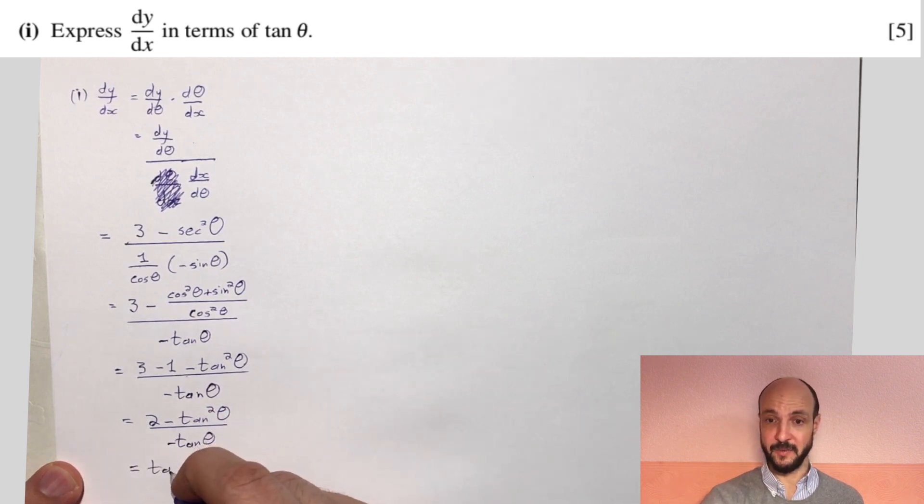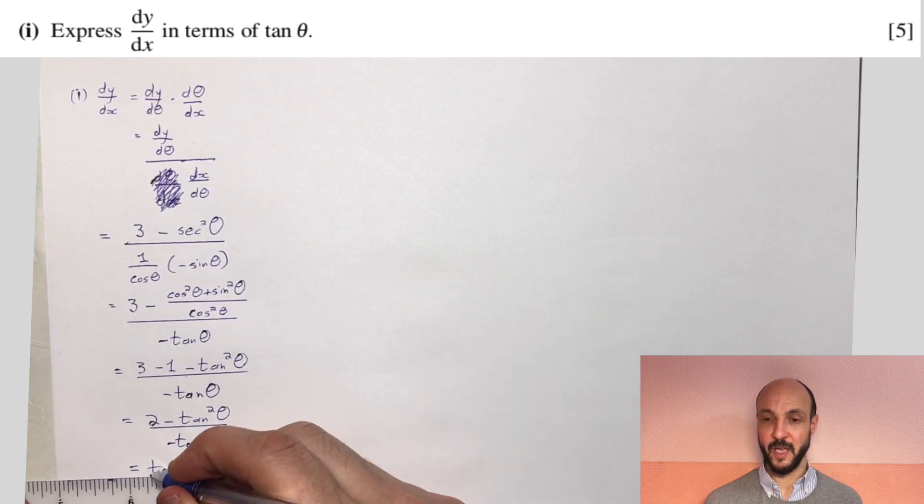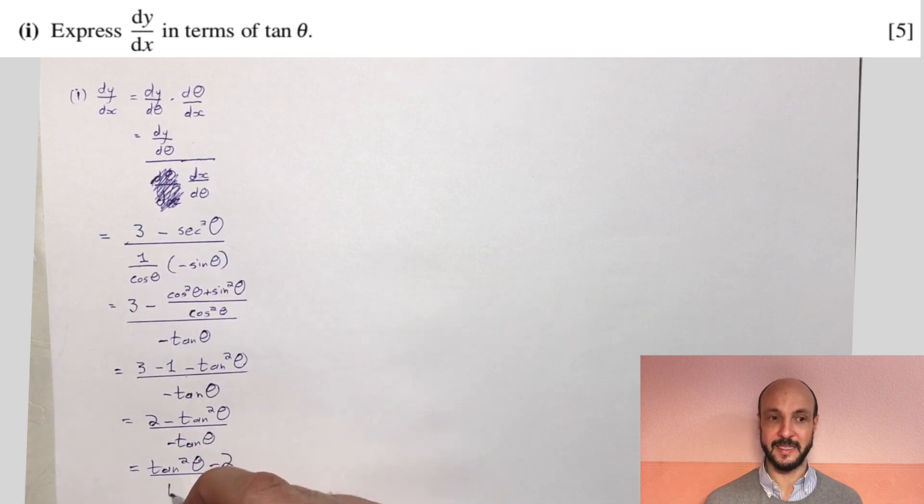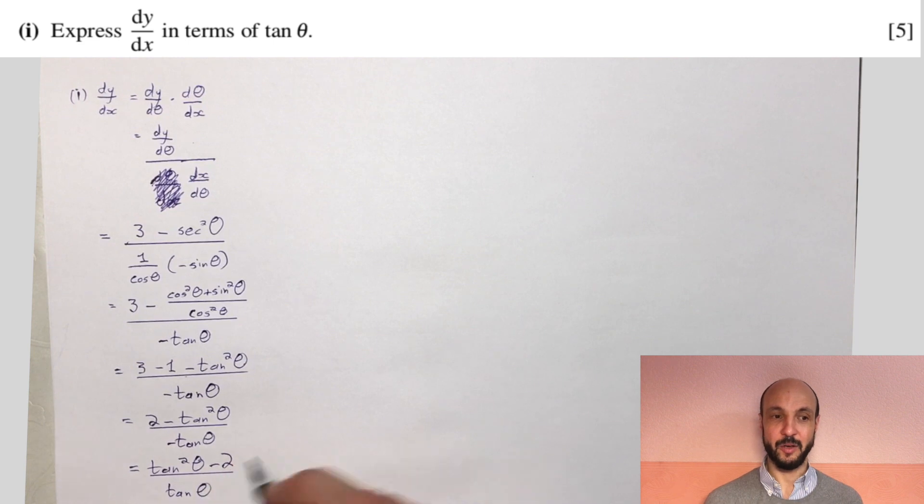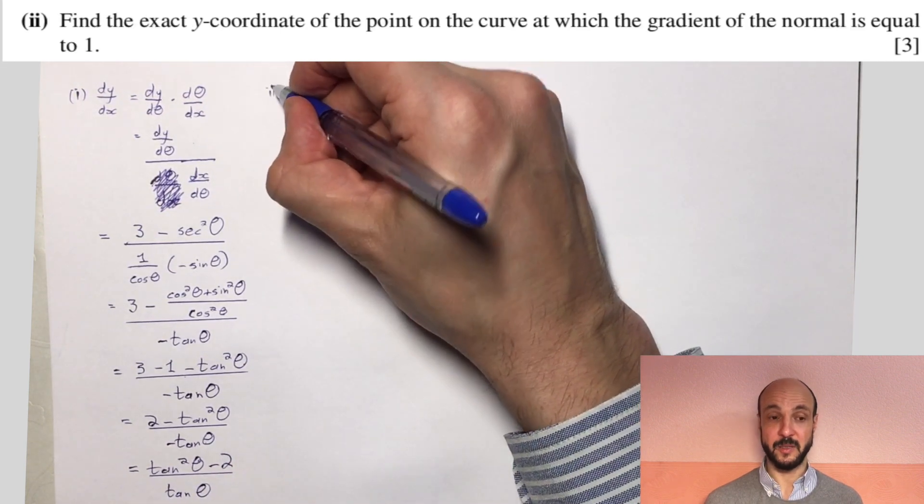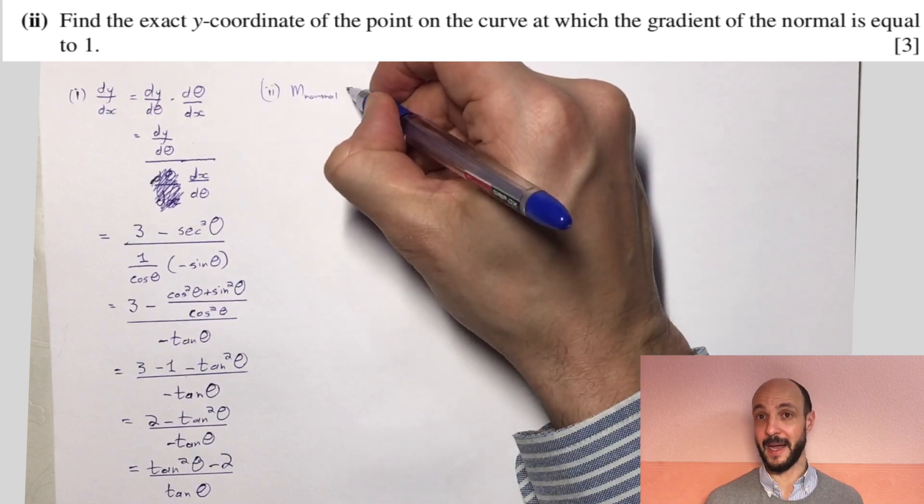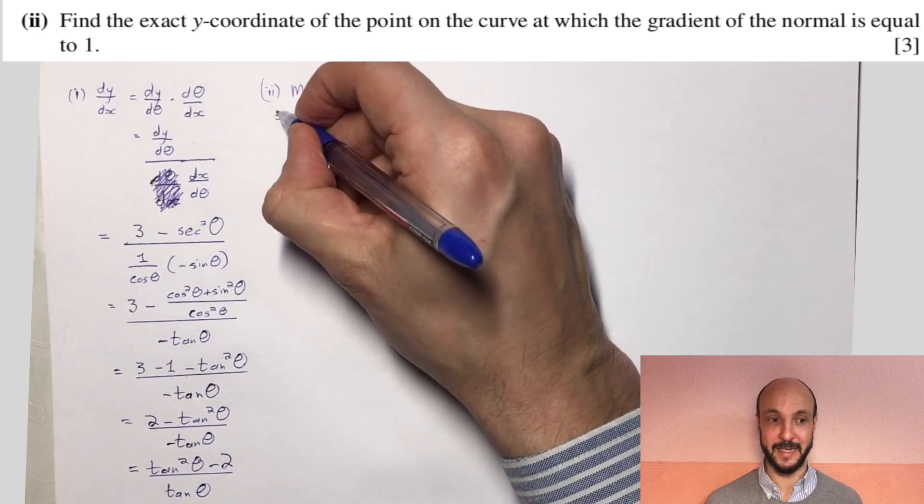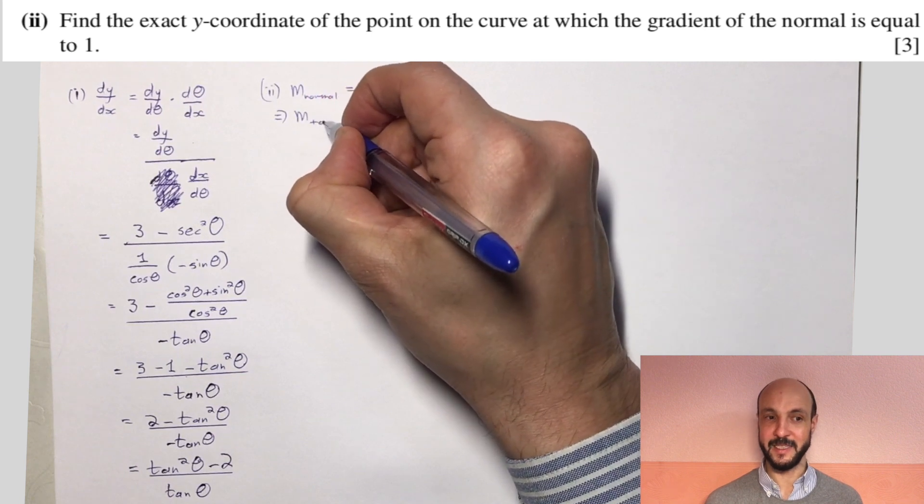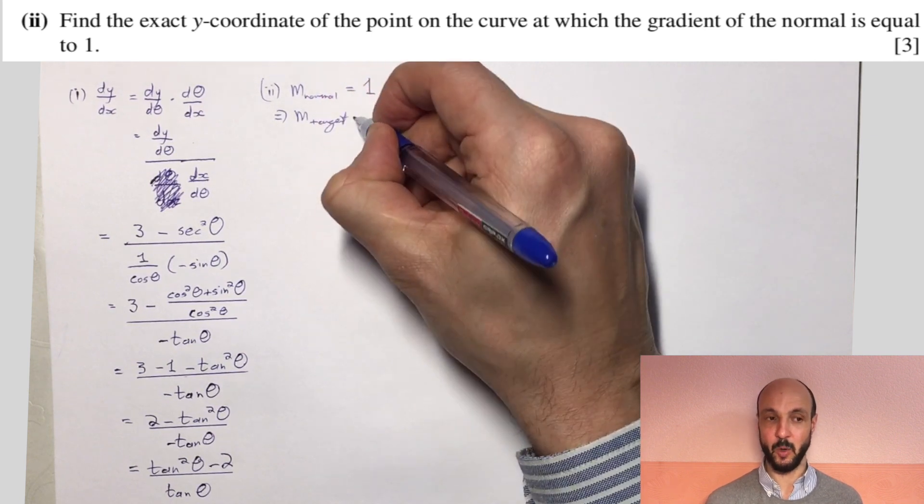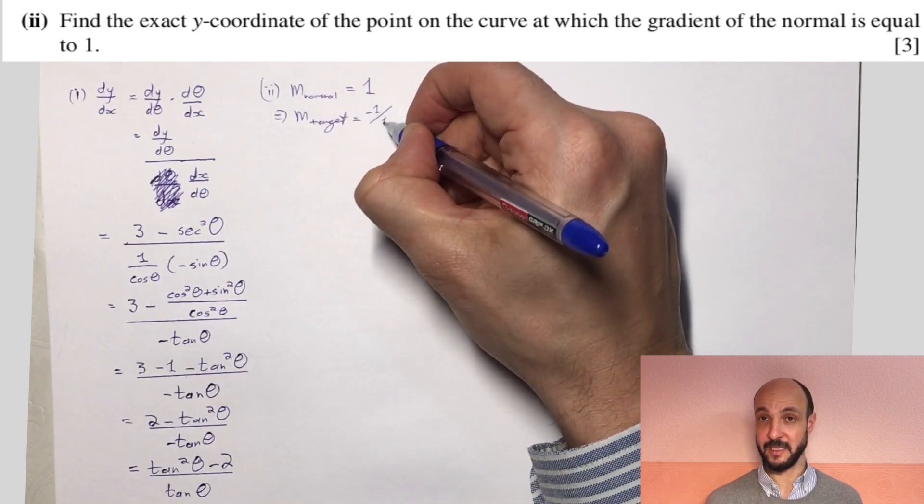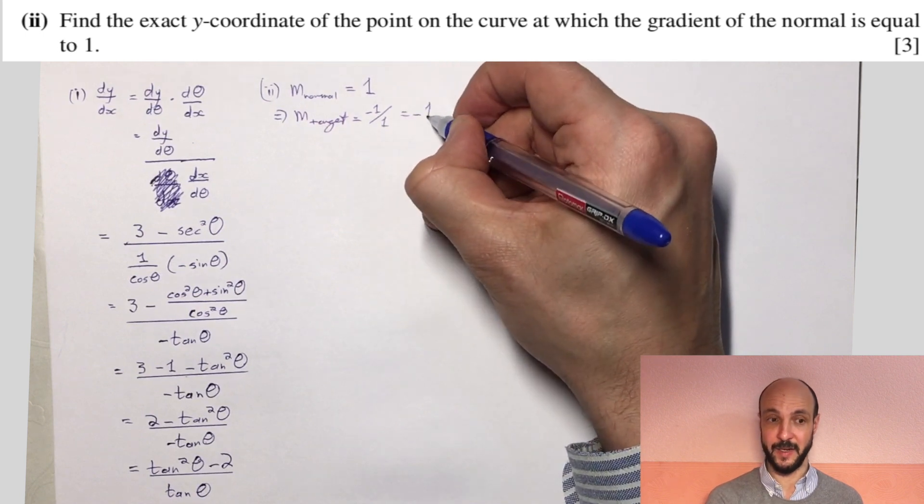So the second part of the question, we want the y-coordinate of the point on the curve at which the gradient of the normal is equal to 1. So the gradient of the normal is equal to 1 is the same as saying that the gradient of the tangent is equal to minus 1 divided by 1, which is minus 1. So we want the gradient of our tangent to be minus 1. Now our gradient of our tangent is dy/dx, which we found in the first part.